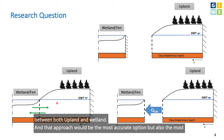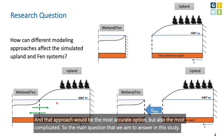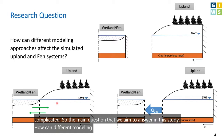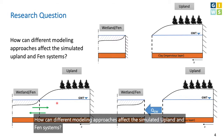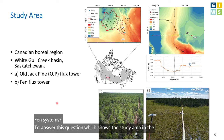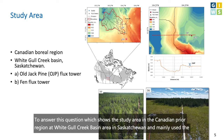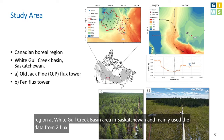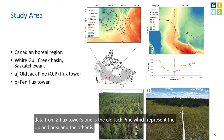The main question we aim to answer in this study is: how can different modeling approaches affect the simulated upland and fen systems? To answer this question, we use the study area in the Canadian Boreal region at White Gull Creek Basin in Saskatchewan, and mainly used data from two flux towers — one is the old jack pine, which represents the upland area, and the other is the fen, which represents the wetland component.